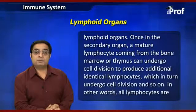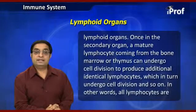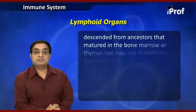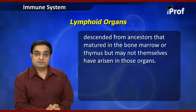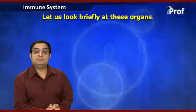A mature lymphocyte coming from the bone marrow or thymus can undergo cell division to produce additional identical lymphocytes, which in turn divide and so on. All lymphocytes are descendants of ancestors that matured in the bone marrow or thymus, but may not themselves have arisen in those organs. All the progeny cells derived in this way finally constitute a lymphocyte clone. There are no anatomical links other than the cardiovascular system between the various lymphoid organs.